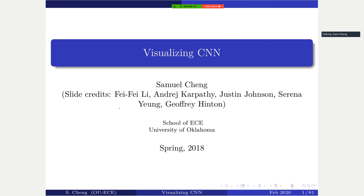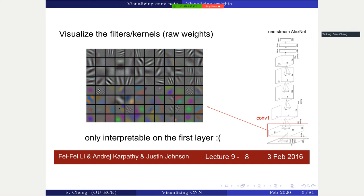One approach is to directly look at the activations inside a CNN. The first layer is quite intuitive — you have an image, you perform a convolution with different filters, and you can look at the filter results. For the first layer, it's kind of interpretable: you have an image, a specific filter, and you see the result of that filter.